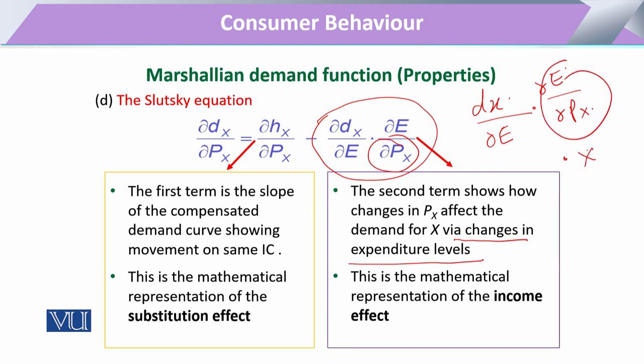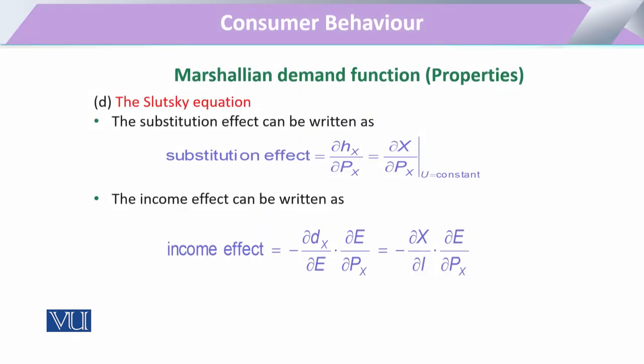The change in commodity demanded is due to the change in expenditure that the consumer must make in response to a price change. If the price has increased, the consumer adjusts by increasing expenditure; if price has decreased, the consumer adjusts accordingly. The Marshallian demand function makes it possible to derive the income effect mathematically, and ultimately answers what the change in quantity demanded will be due to a change in price — decided by the indirect utility function.